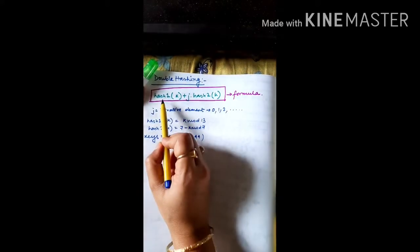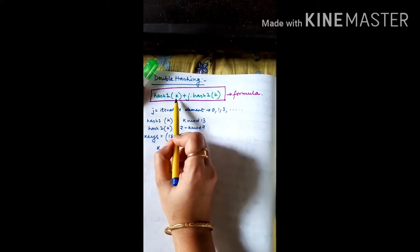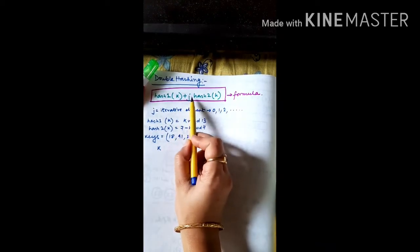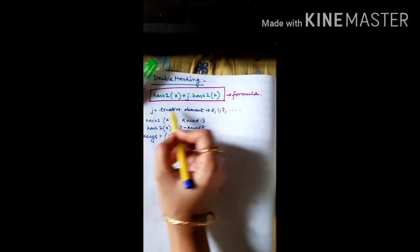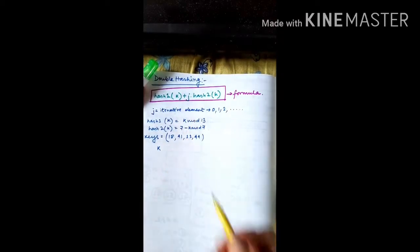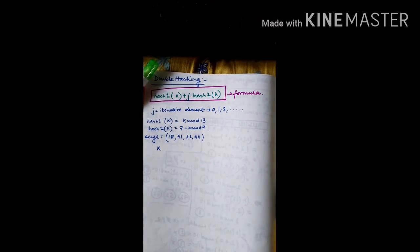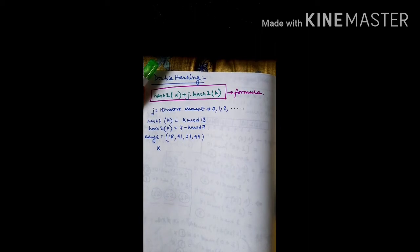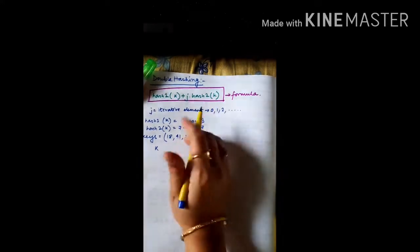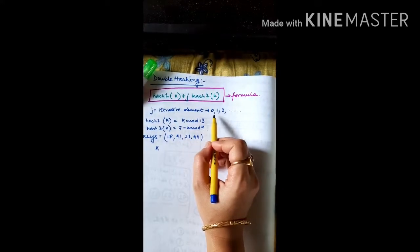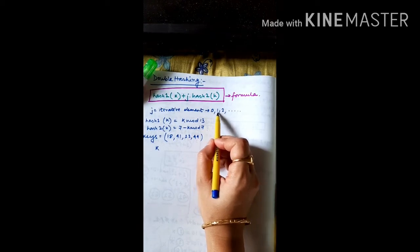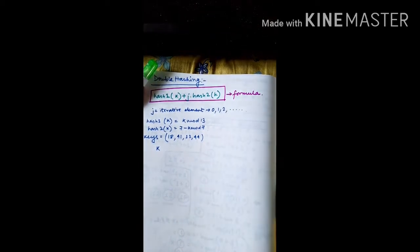First, we use hash function 1 on our value key, and with that, we multiply j and hash function 2 on our value key. Now, j is an iterative element, just like i which we used in our previous two methods. The value of j ranges from 0 to infinity — starting at 0, then incrementing to 1, 2, 3, 4 and so on.